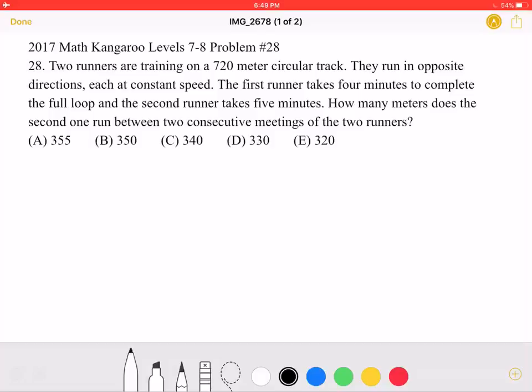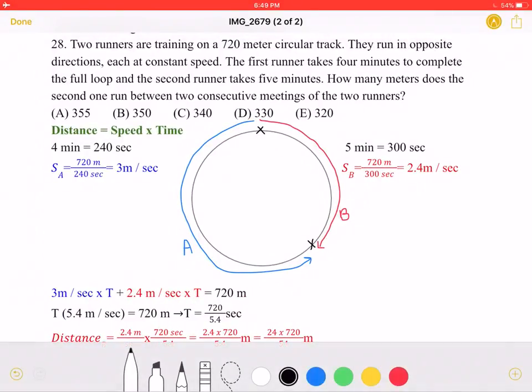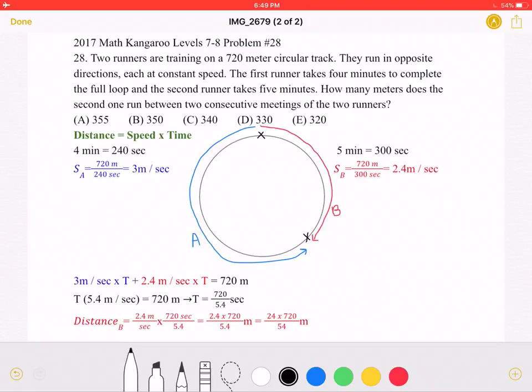This is the problem as it originally appeared on the test, and here is where we'll be doing the solution. So this formula over here is very important to do this problem. Distance is equal to speed times time.